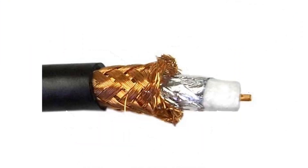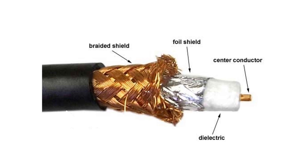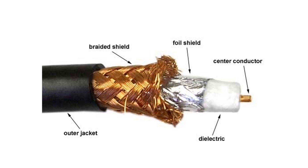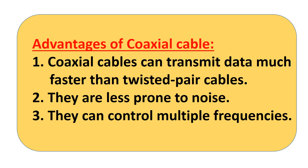The coaxial cable has a conductor placed in the center, surrounded by multiple protective shields and an outer jacket, that ensure noise and distortion free transmission of high frequency data. Coaxial cables can transmit data much faster than twisted pair cables.